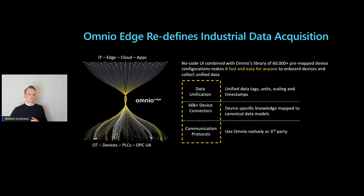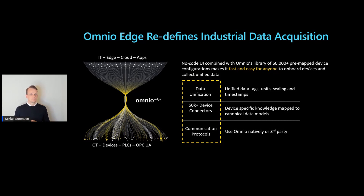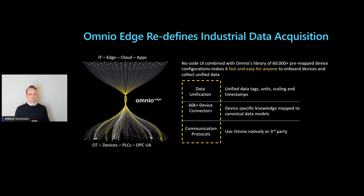Omnio Edge is a no-code solution that solves that entire problem stack with a simple UI for configuring the software, more than 60,000 pre-built device connectors, and an automated unification layer, all wrapped in a small Docker container.